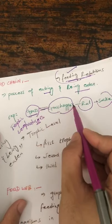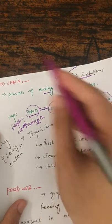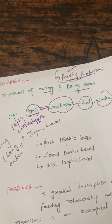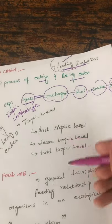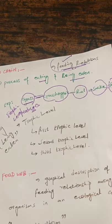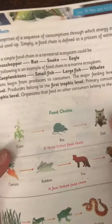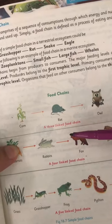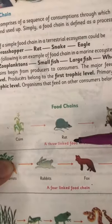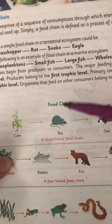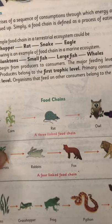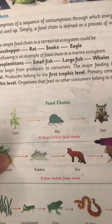The feeding relationship feels like a chain, that's why it is known as a food chain — a graphical representation which has different trophic levels. Here we have a three-linked food chain. A three-linked food chain means that there are only three trophic levels. For example, the corn is eaten by a frog and the frog is eaten by the owl. That's why it is known as a three-linked food chain.